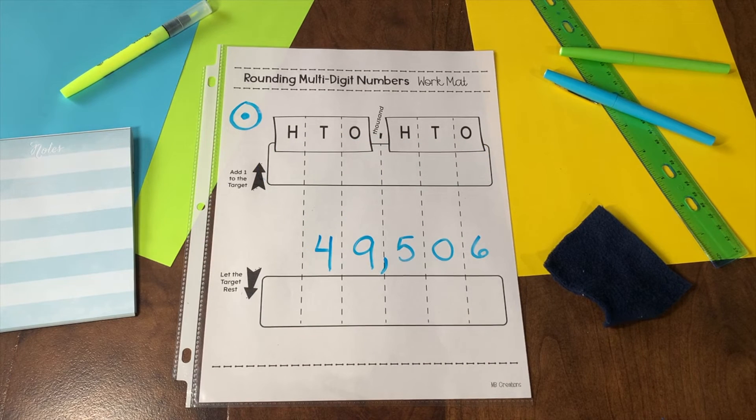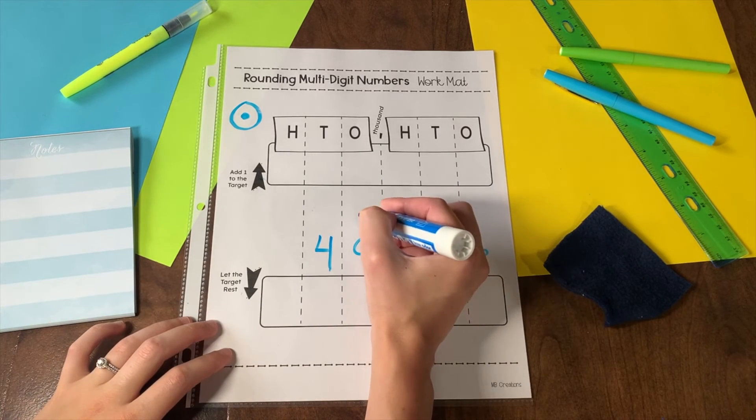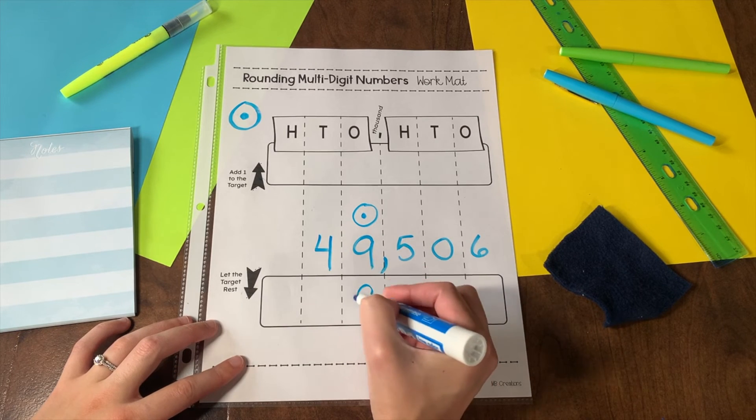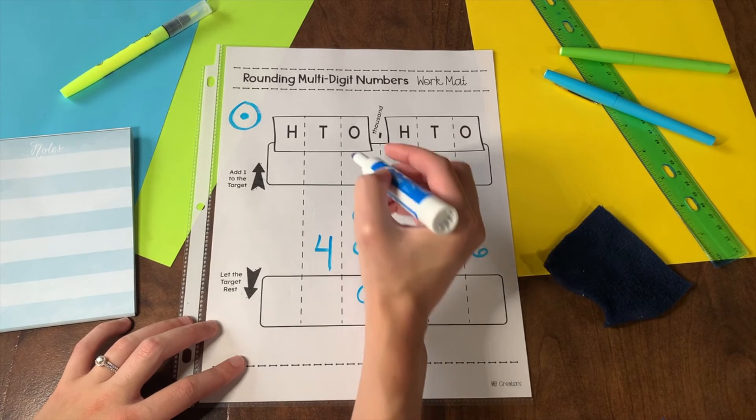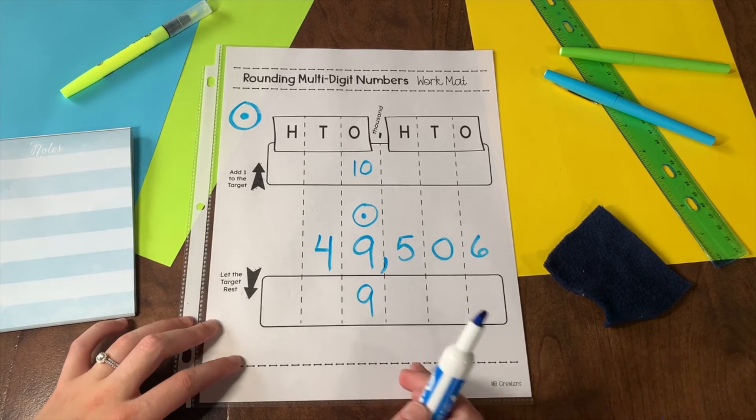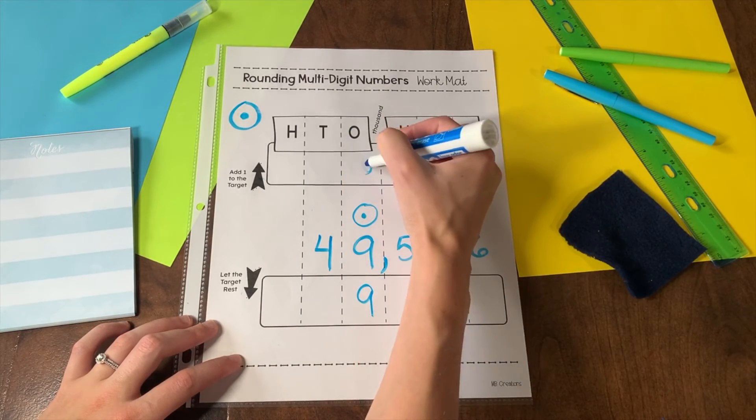Some of the trickiest numbers to round use the digit 9. Let's make our target the thousands place. This 9 will either stay as a 9 or increase to a 10. But I can't write two digits in one place value column. So instead, I have to carry my 1 into the next place.